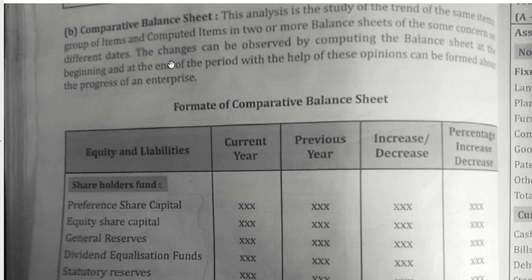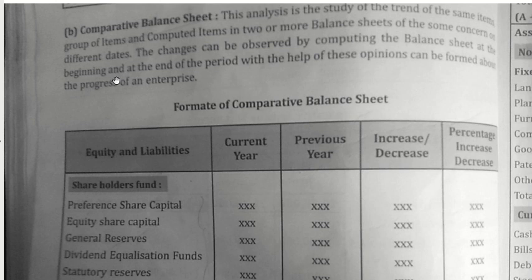Hello everyone, this is Jennifer. In this video we're going to look into the next part of our comparative statement, which is the comparative balance sheet. In a comparative balance sheet, we analyze the same items or group of items and compute items in two or more balance sheets of the same concern on two different dates. The changes can be observed by computing the balance sheet at the beginning and at the end of the period. With the help of these, opinions can be formed about the progress of an enterprise. In simple words, we basically take two years' balance sheet of the same company and compare the trend — meaning whether there is an increase or a decrease in the items of the balance sheet.